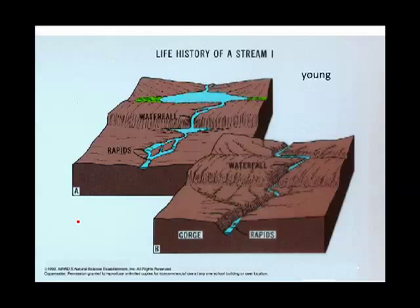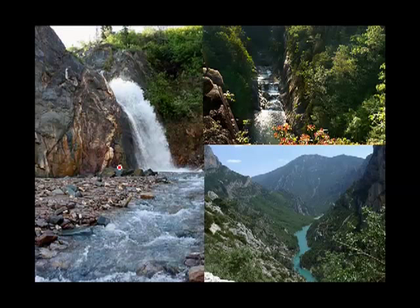Looking at a young river, notice that we have waterfalls and rapids. If you see any white water, you know you've got a young river. Over a period of time, the waterfall has moved back — that movement is called headward erosion because it's eroding toward the headwaters. Eventually, every waterfall will erode itself out of existence. The other obvious change happening to this river is that it is downcutting. This river has only bedrock; there's no sediment deposited by this young river. These are all young rivers — you see the white water and a nice V-shaped valley.